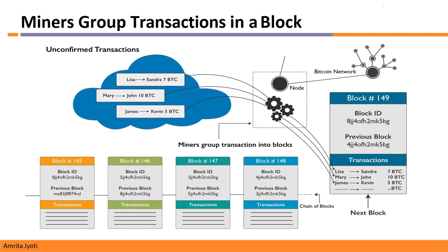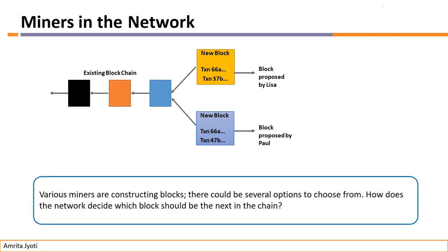After the block is added to the chain, no change can be made to any of its transactions. This is why it is said that the blockchain is immutable — because now no change can be made to it. If any change does occur, the hashing in the next block will not match.